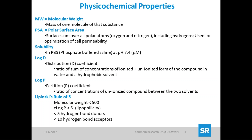PSA — polar surface area — is a calculated value looking at the surface sum of all polar atoms including hydrogen, oxygen, and nitrogen, used for optimization of cell permeability. It's a useful tool mainly for CNS drugs. The value you want is under 70, but ideally 40. In practice, CNS drugs in animals tend to have PSA around 70, and drugs on the market average around 55.